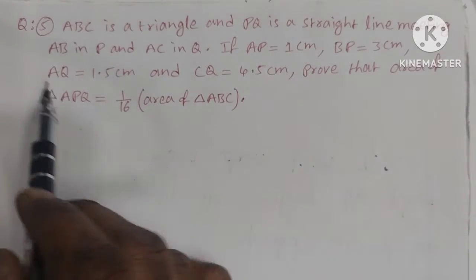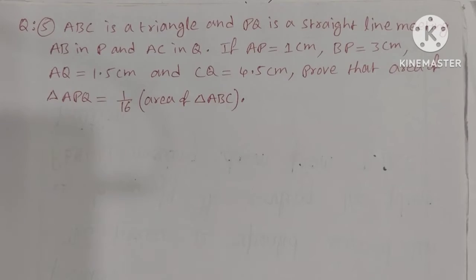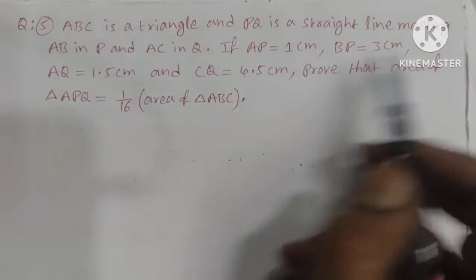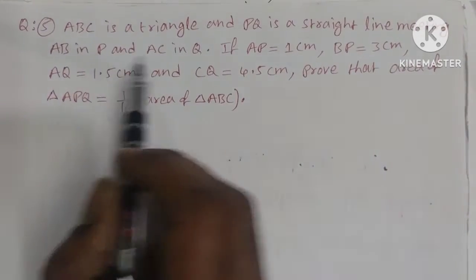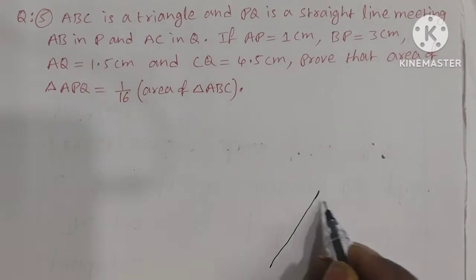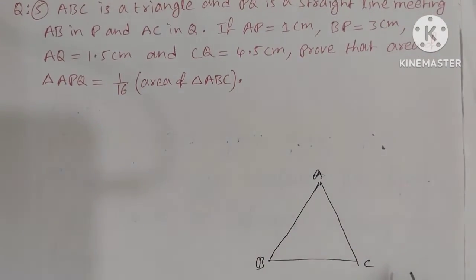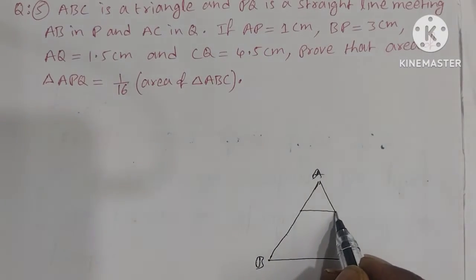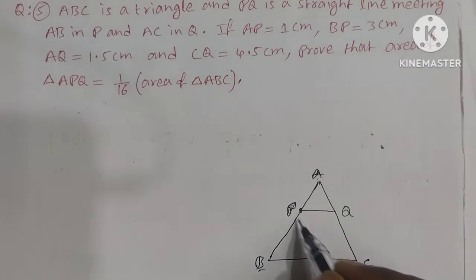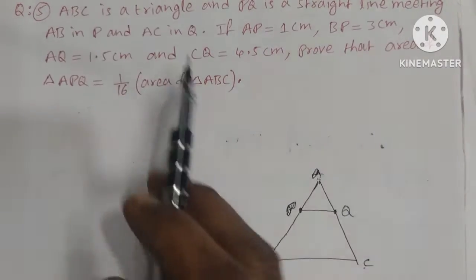Question number 5 is very simple — if we know the basics, it is very easy. A triangle ABC has a line PQ meeting AB at P and AC at Q. Given: AP = 1 cm, BP = 3 cm, AQ = 1.5 cm, and CQ = 4.5 cm.